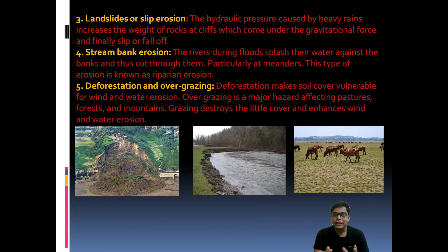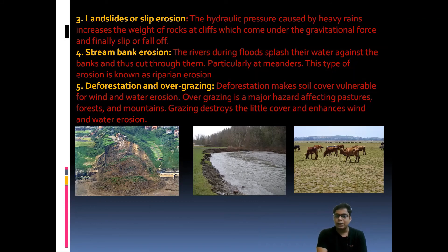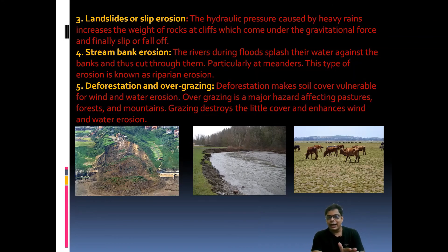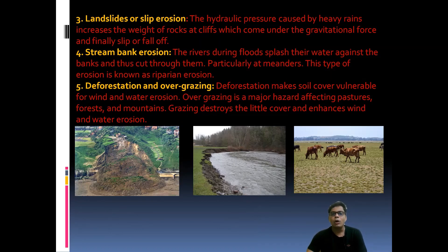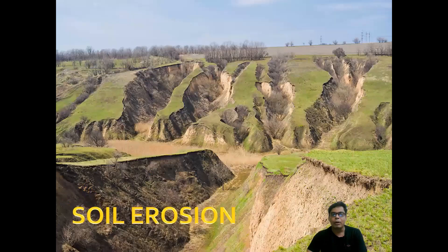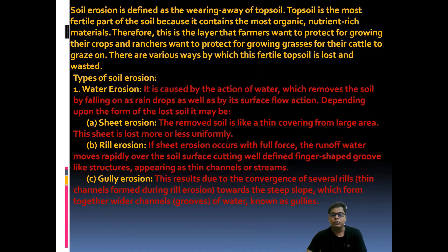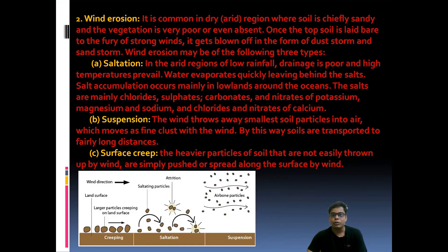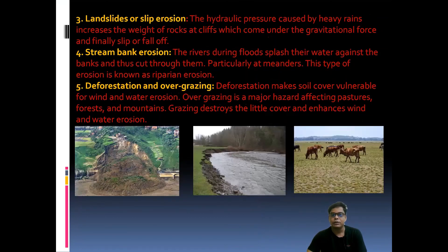Number five is deforestation and overgrazing, which also play a vital role in soil erosion. If there is vegetation cover on the land, wind cannot directly act on it and runoff is also decreased. But in cases of overgrazing, the grass is slowly removed from the top soil and the bare soil becomes very vulnerable. Grazing destroys the little vegetation cover and enhances both wind and water erosion.